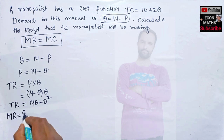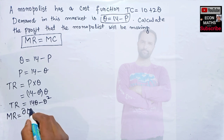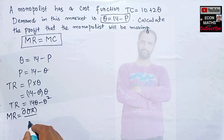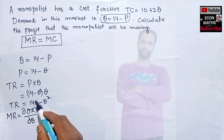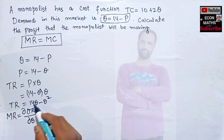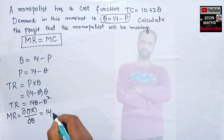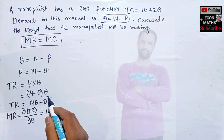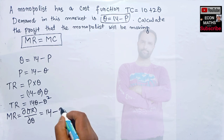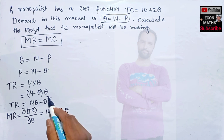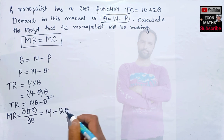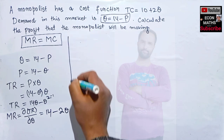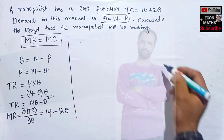Marginal revenue is simply the derivative of total revenue with respect to quantity. Differentiating TR = 14Q - Q² with respect to Q: the derivative of 14Q is 14, and the derivative of Q² is 2Q. So marginal revenue MR = 14 - 2Q.